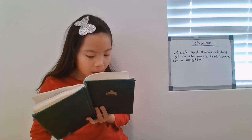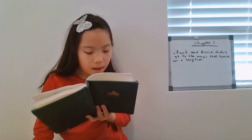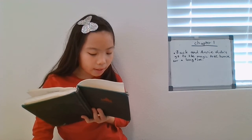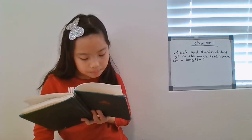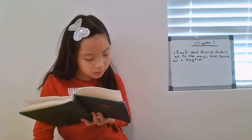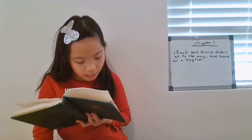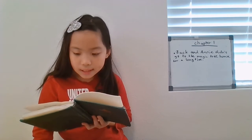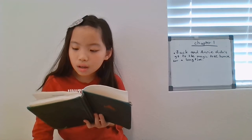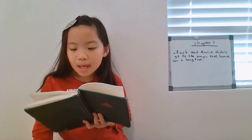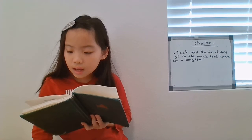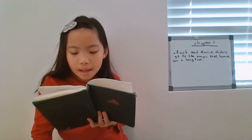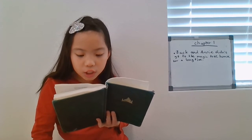Oh, brother, said Jack. But he took off after Annie. Even in the growing darkness, they easily found their way. They zigzagged between bare trees and ran over the frozen ground until they came to the tallest oak in the woods. See, said Annie, pointing to the top of the tree. Yeah, whispered Jack. There it was — the magic tree house.